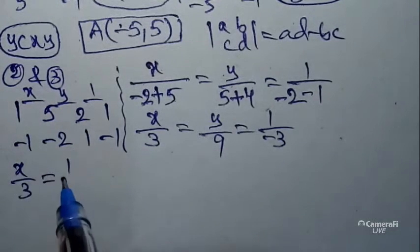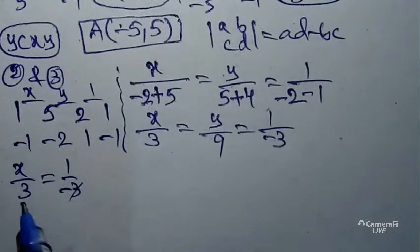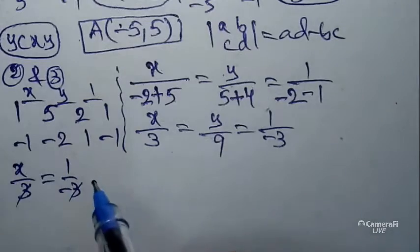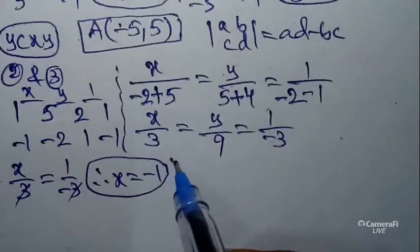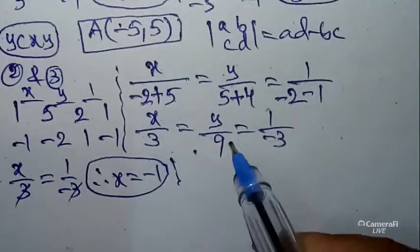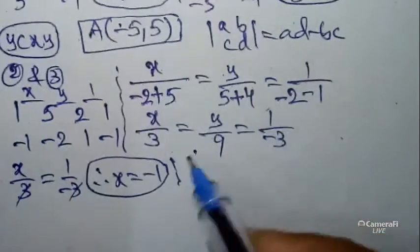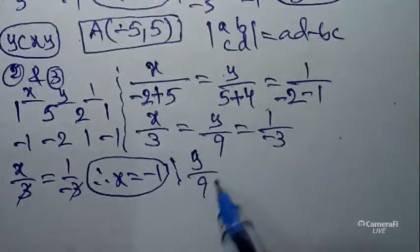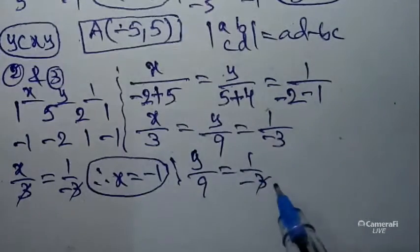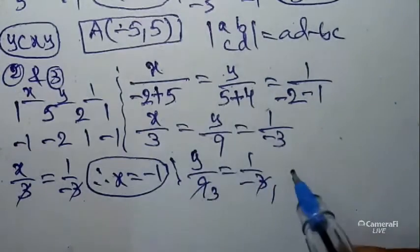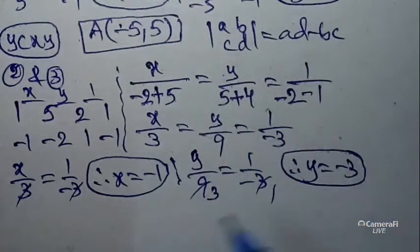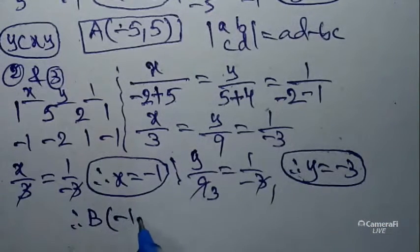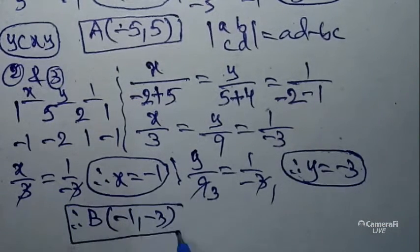To get x: x/3 = 1/(-3), cross multiply → x = -1. To get y: y/9 = 1/(-3), cross multiply → y = -3. Therefore, point B = (-1, -3).